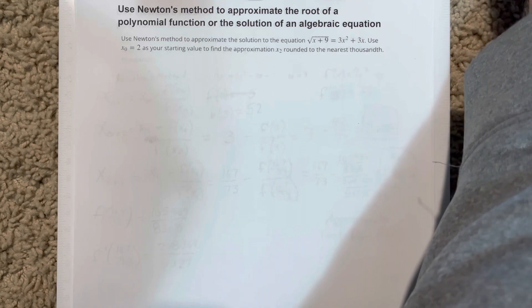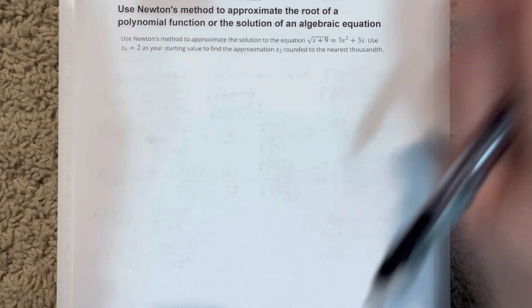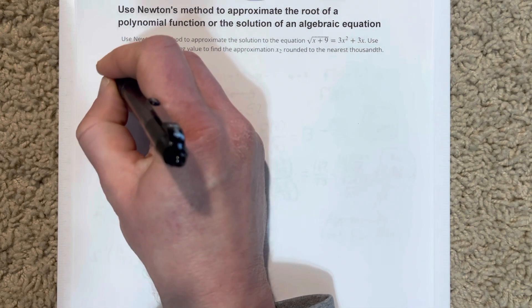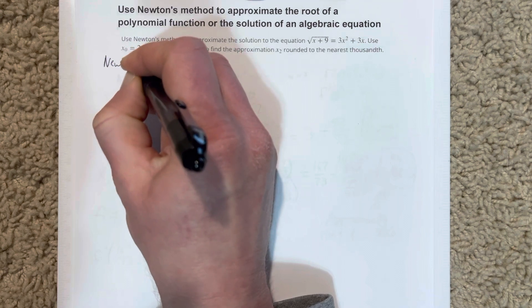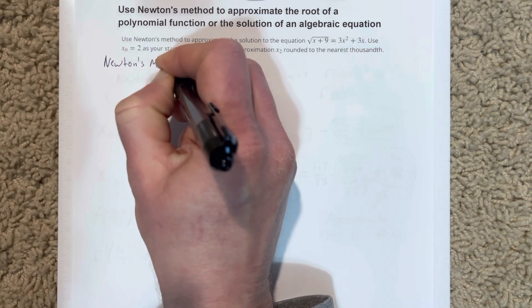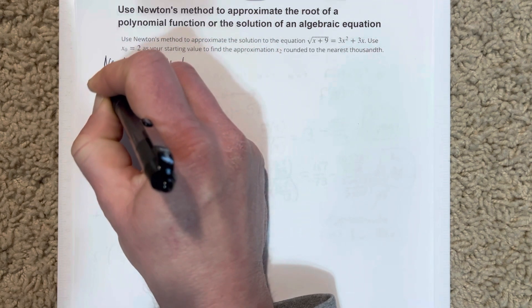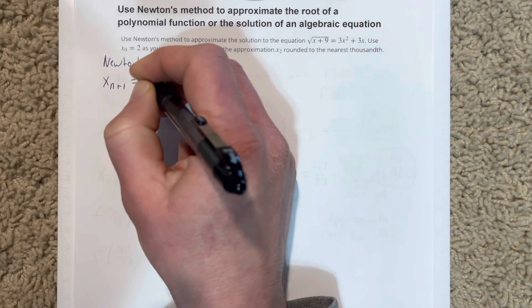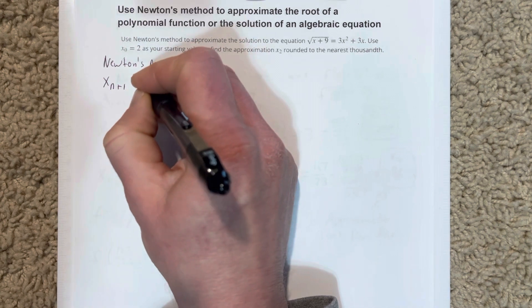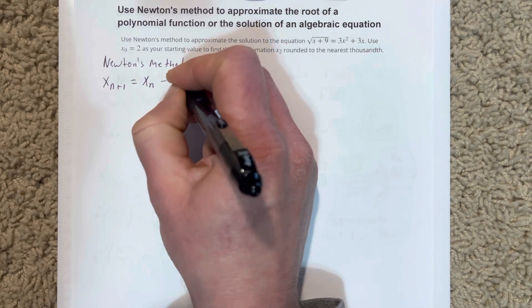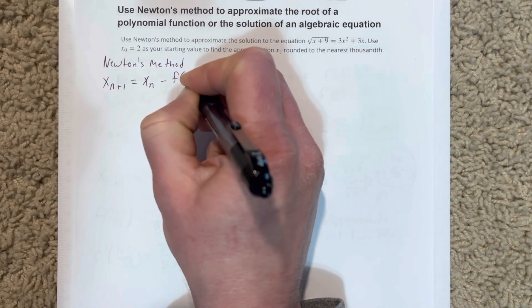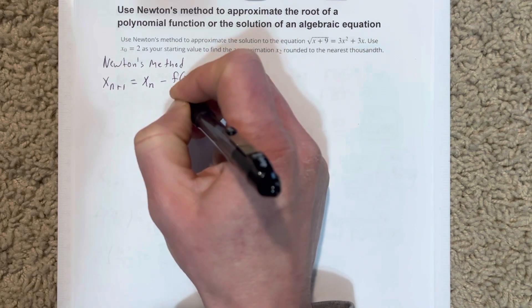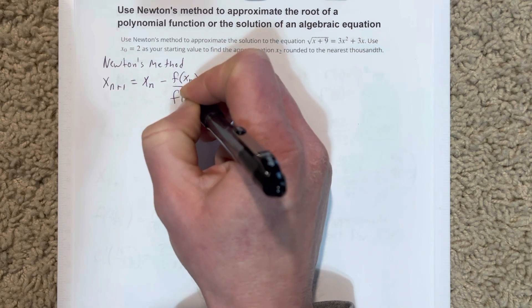We're going to write down what Newton's method states. Newton's method is x sub n+1 equals x sub n minus f of x sub n over f prime of x sub n.